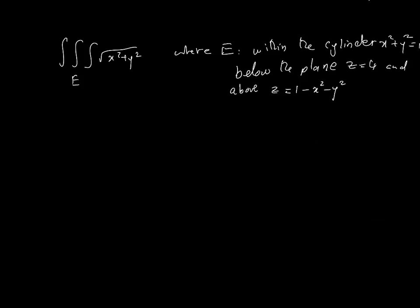So here's an example where we want to calculate this integral of x² + y² dV over the region E, where E is within the cylinder x² + y² = 1, below the plane z = 4, and above z = 1 - x² - y². So we're going to go with the polar coordinates in this case, because the cylinder itself x² + y² = 1 means that your radius is between 0 and 1.